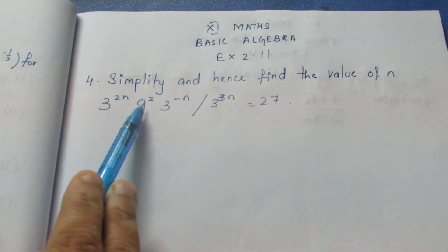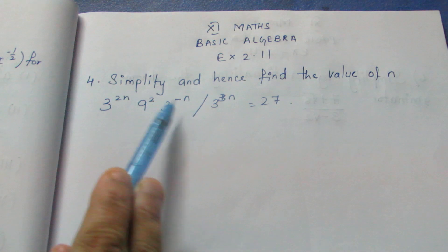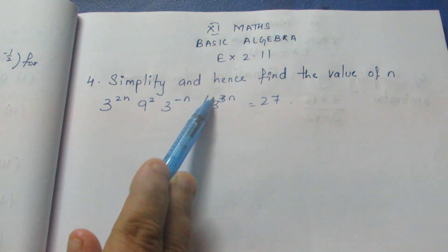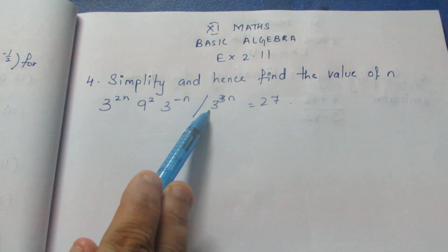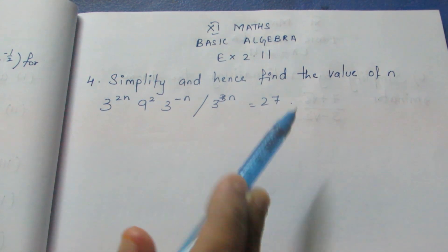The expression is 3 power 2n into 9 power 2 into 3 power minus n, divided by 3 power 3n equals 27.